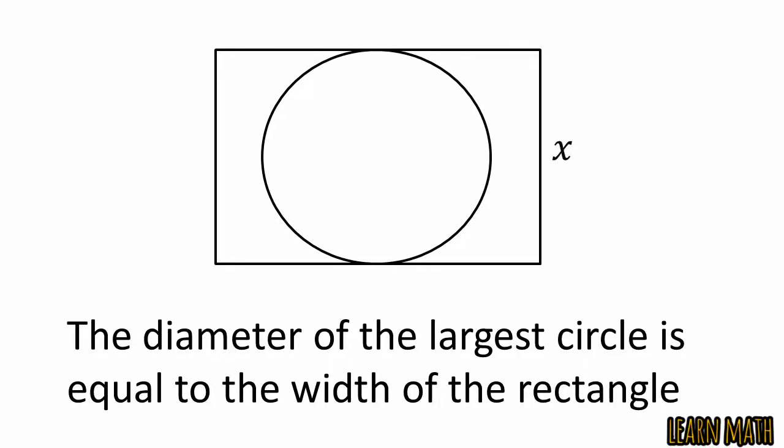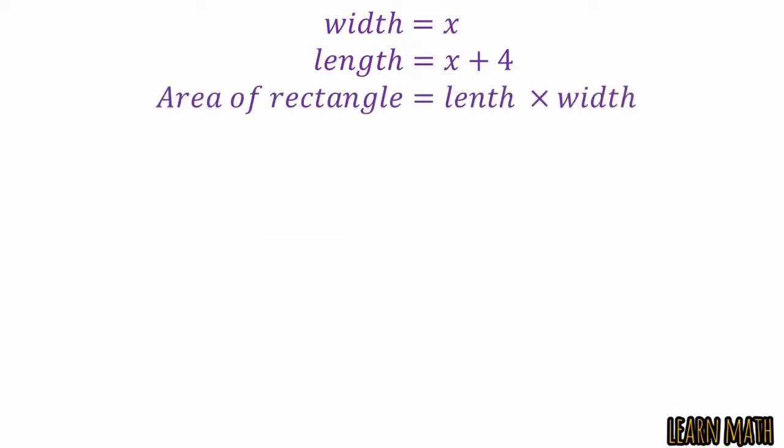Let the width of the rectangle be x and the length of the rectangle is, according to the question, x plus 4. Area of the rectangle is equal to length multiplied by width.